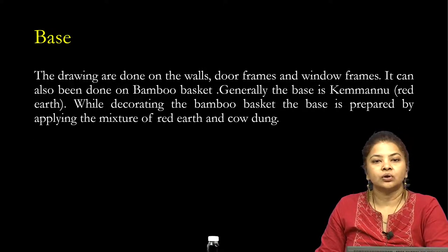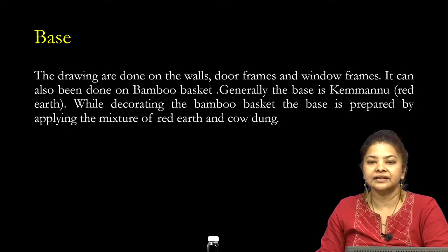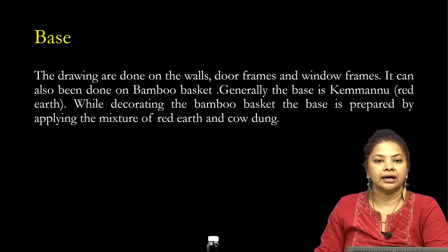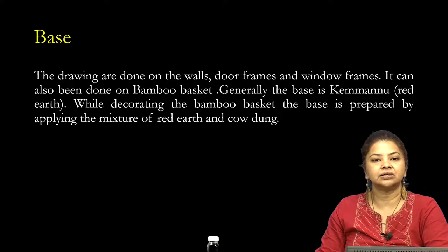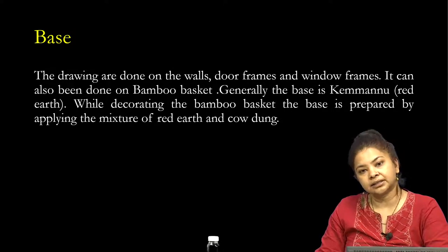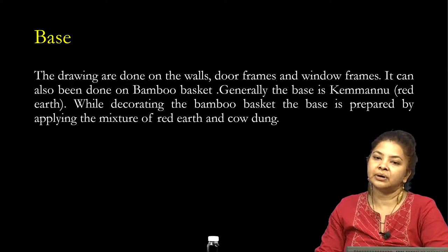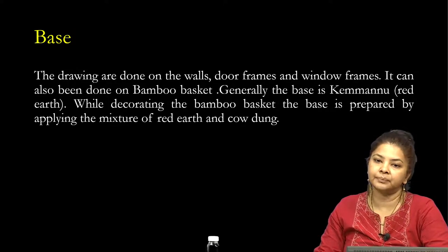The drawings are done on walls, door frames, and window frames. They can also be done on bamboo baskets, as we saw in the first slide. Generally the base is red earth. While decorating the bamboo basket, the base is prepared by applying a mixture of red earth and cow dung. The Chitra painting on bamboo baskets is done over this coating of cow dung and red earth.